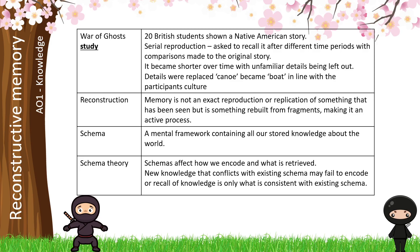One term you might be unfamiliar with in this section is serial reproduction. This is another way of explaining a repeated measures design, where participants were tested against themselves over different periods of time — days, weeks, months — and compared to themselves in terms of giving responses that match that original story.